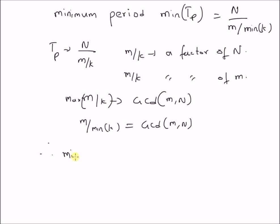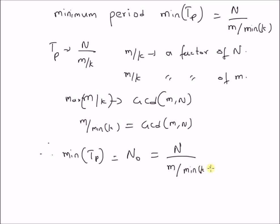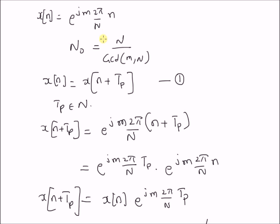Therefore, the minimum period of the periodic signal e^(j * m * 2π/N * n) is equal to N over GCD(m, N). This ratio is the minimum period of the periodic signal e^(j * m * 2π/N * n). So the minimum period for this signal is given by this value.